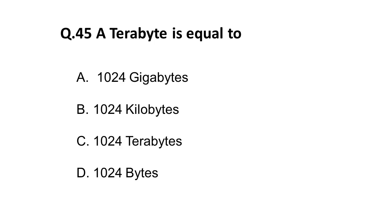Next question: a terabyte is equal to — as we have seen, gigabyte is smaller than terabyte, so 1024 gigabytes equals one terabyte. You must memorize all these relations between different memory units. One terabyte equals 1024 gigabytes.